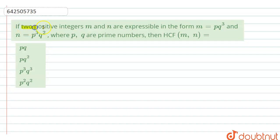The question says that if the positive integers M and N are expressible in the form M is equal to PQ raised to 3